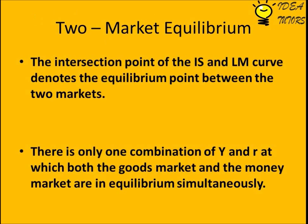The intersection point of the IS and LM curves denotes the equilibrium point between the two markets. There is only one combination of Y and R at which both the goods market and the money market are in equilibrium simultaneously.